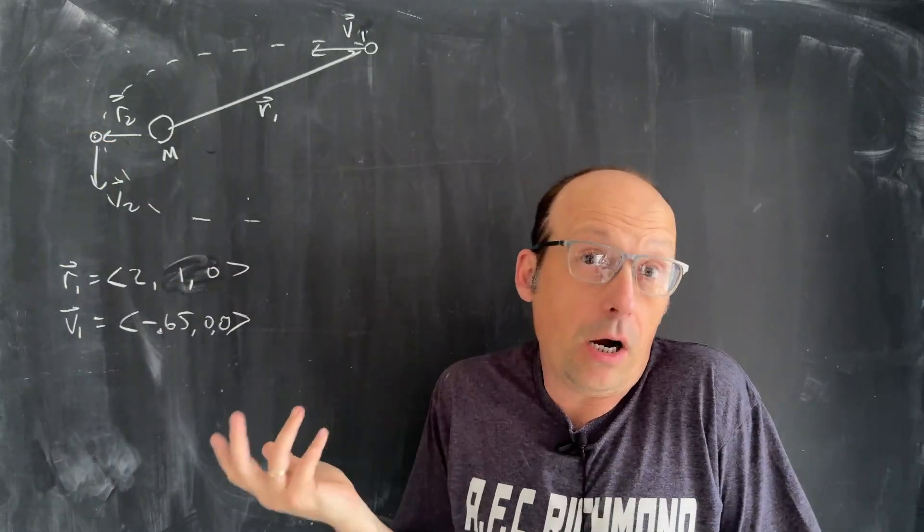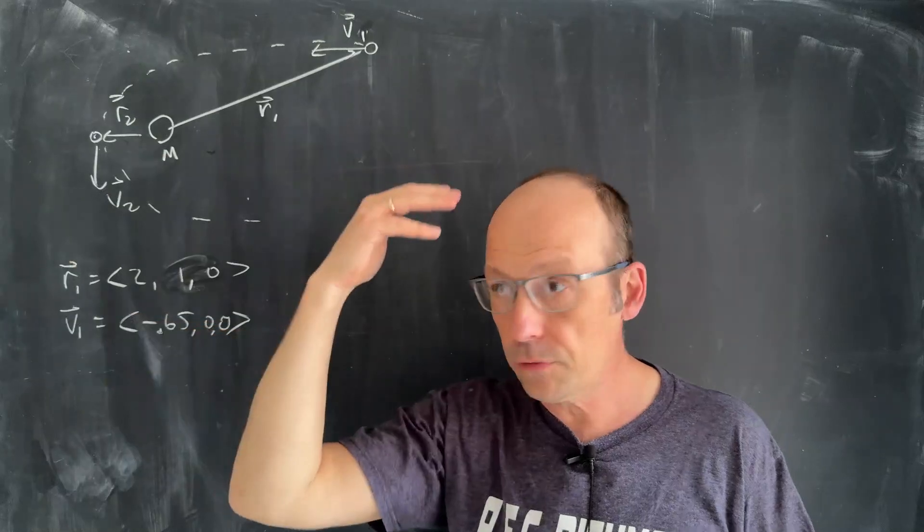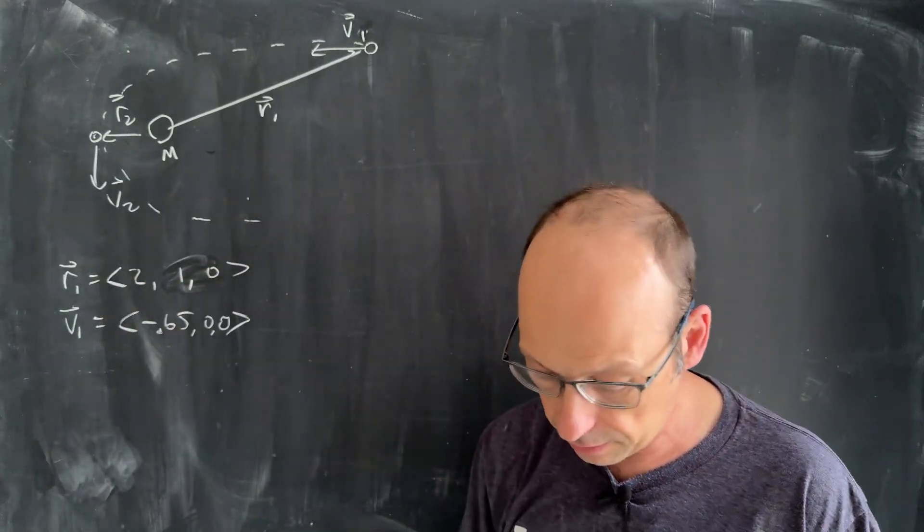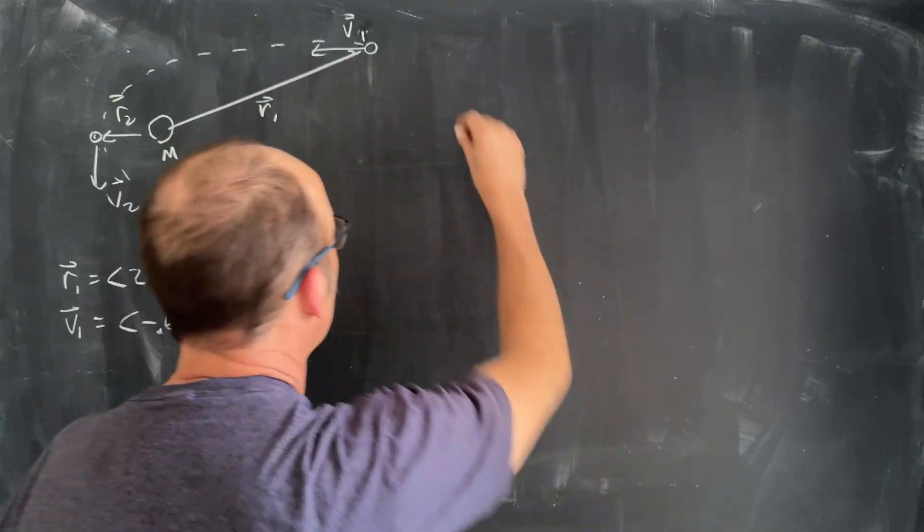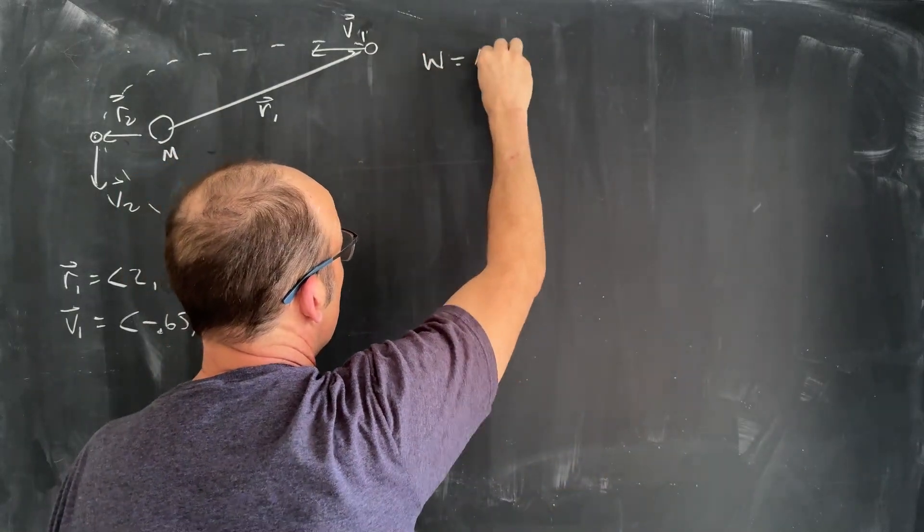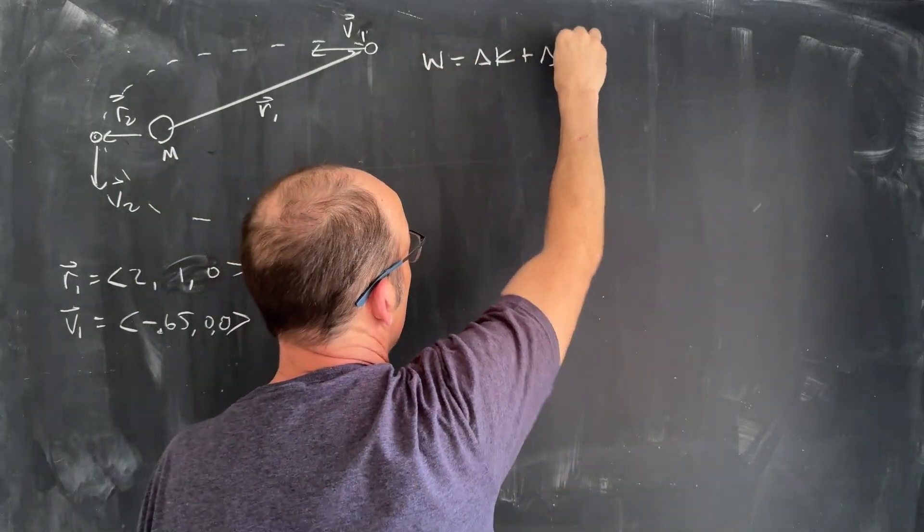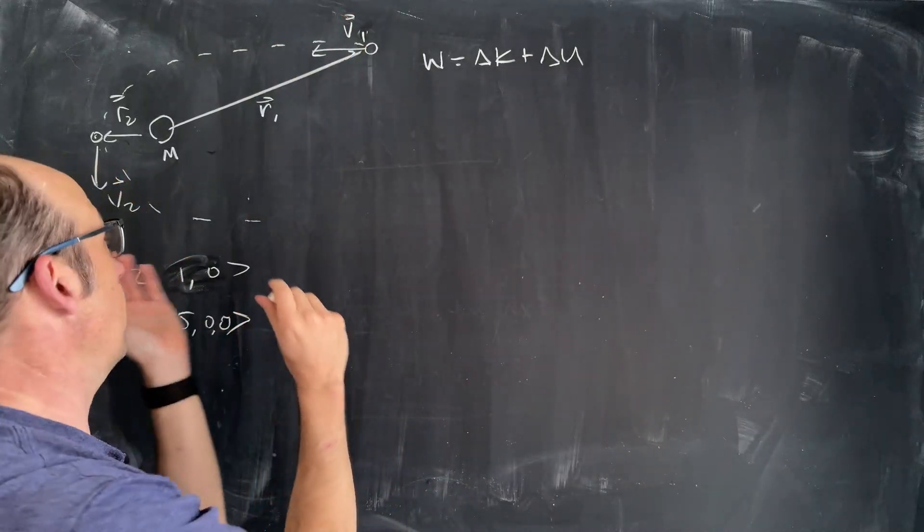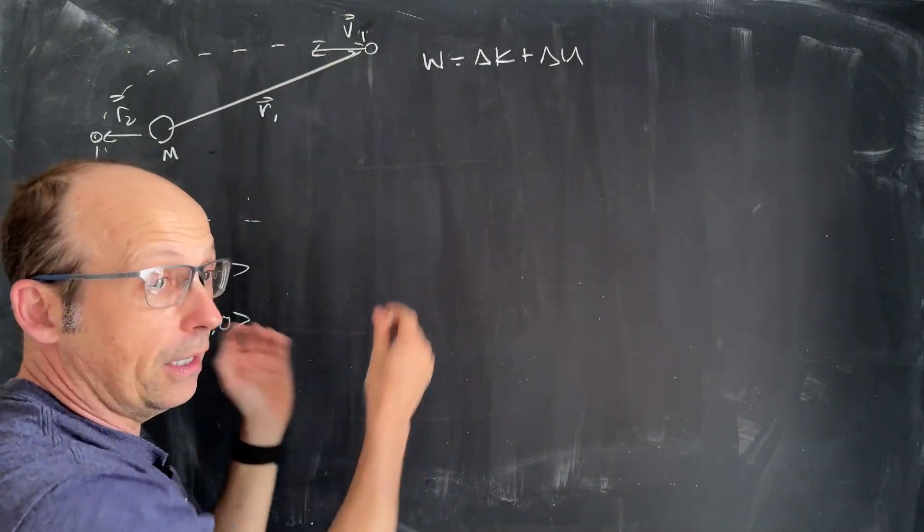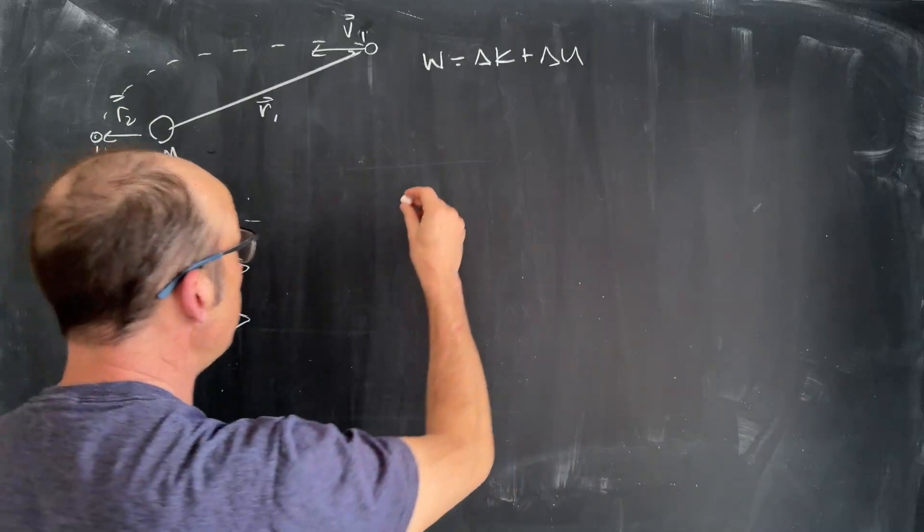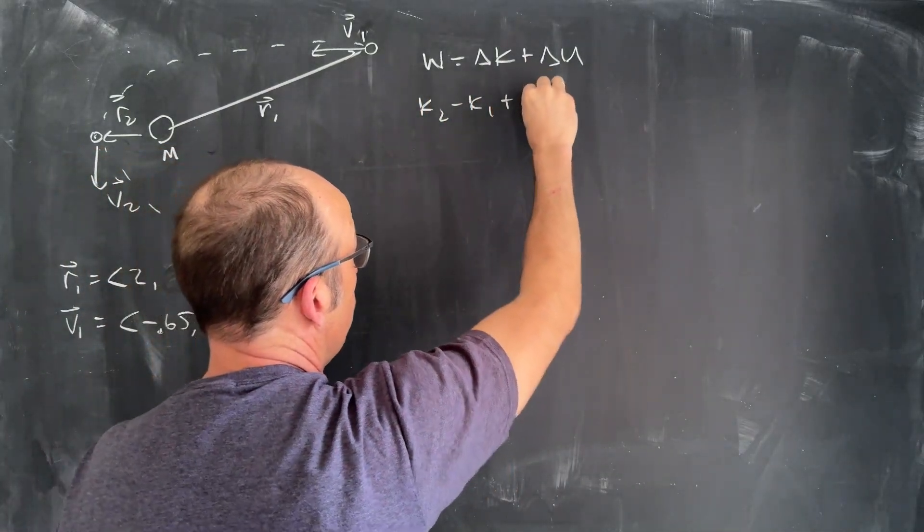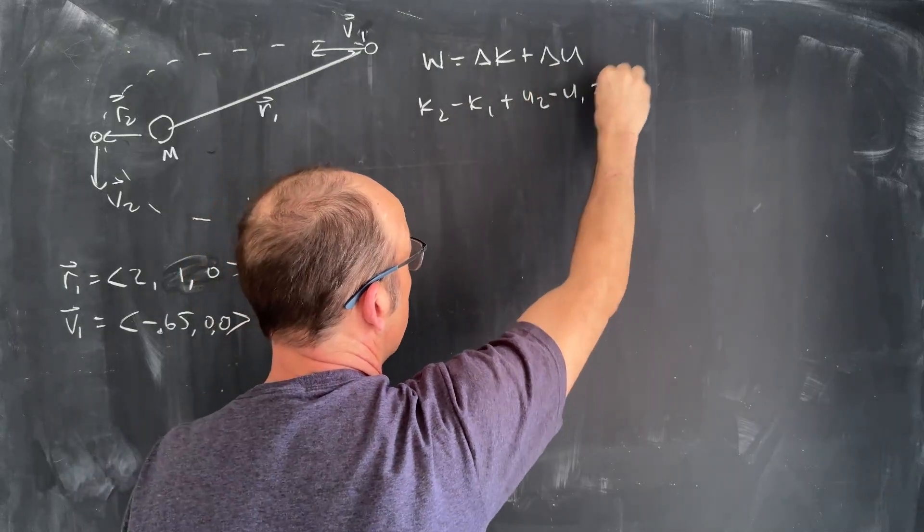Obviously you say, well, you're dealing with velocity, you're dealing with position, we should deal with the work energy principle, and that's a great idea. So let's write down the work energy principle. I can say the work is a change in kinetic energy plus a change in gravitational potential energy. If I include the system of the sun and the comet, then the work is 0.